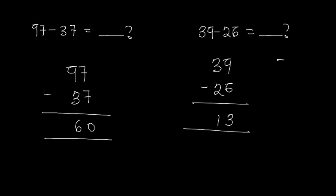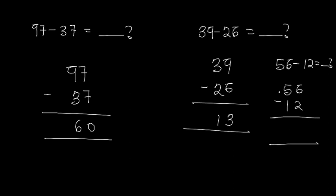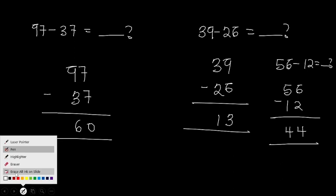Let's have a look at one final example: 56 minus 12. If I subtract 2 from 6 I get 4. Then 5 minus 1 gives 4. So the answer is 44.